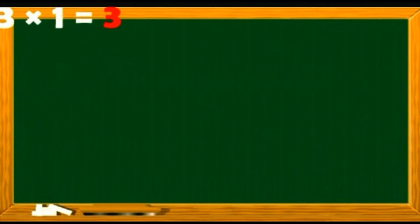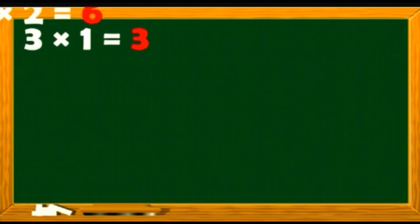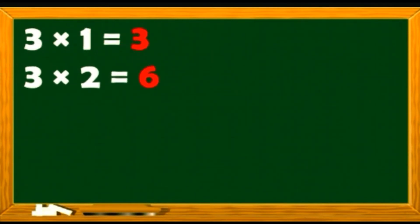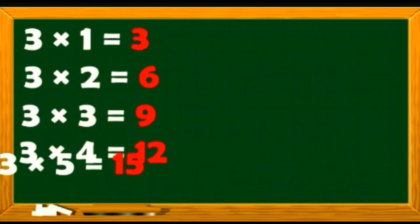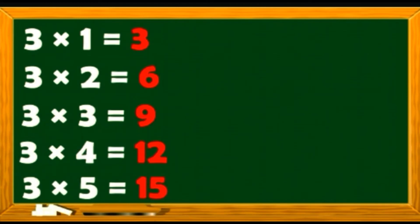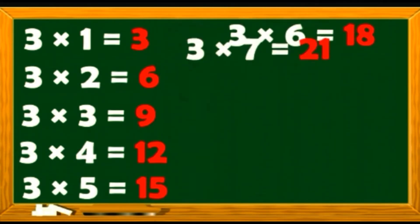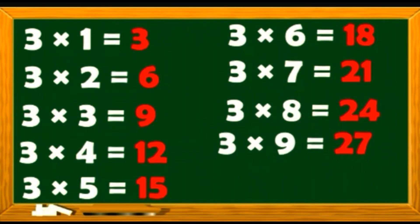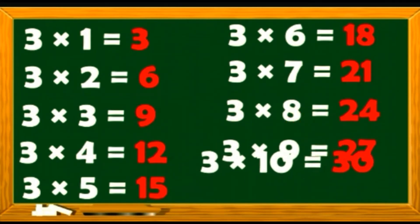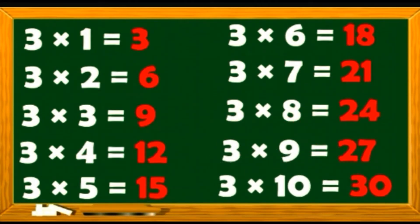Let's do it one more time. 3 1s are 3. 3 2s are 6. 3 3s are 9. 3 4s are 12. 3 5s are 15. 3 6s are 18. 3 7s are 21. 3 8s are 24. 3 9s are 27. 3 10s are 30. Well done children.